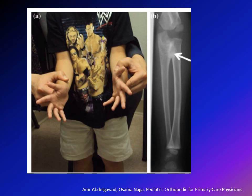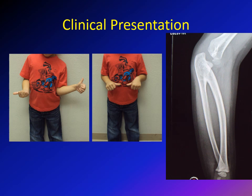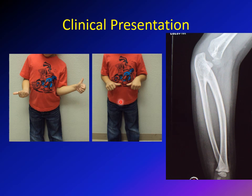Here is a unilateral case that clearly shows the difference. On the right side — the normal side — the child can move from full supination with the palm facing forward to full pronation. However, on the left side — the affected side — the child can reach full pronation but cannot reach full supination, even using maximum wrist and shoulder external rotation compensation.